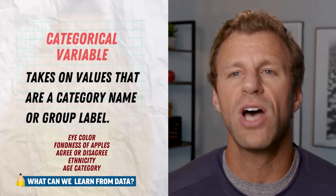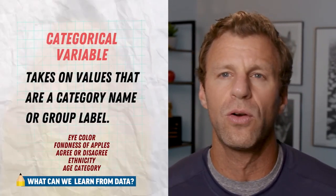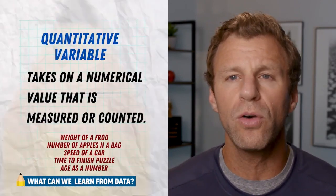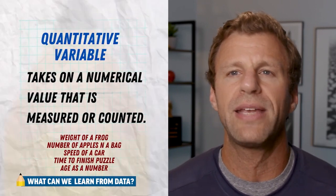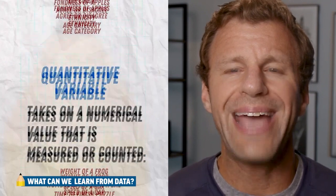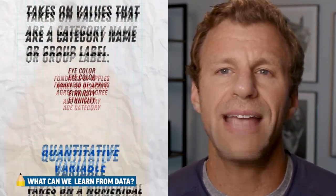A categorical variable takes on values that are category names or group labels, like eye color or hair color. A quantitative variable takes on numerical values that are either measured or counted, like the weight of a frog or how many candies are in a bag. To keep it simple: a categorical variable value is going to be a word, whereas a quantitative variable value is typically going to be a number. There are a couple exceptions — namely zip code. Zip code is a number, but it's not measured and it's not counted, so it's not quantitative. A zip code simply puts your mail into a specific category for your city's post office, which makes it a categorical variable. But in most cases it's pretty straightforward: categorical variables are words, quantitative variables are numbers.